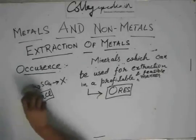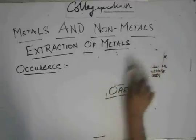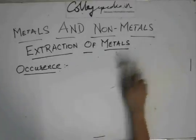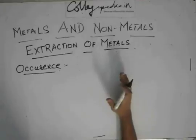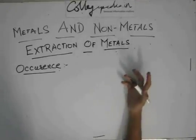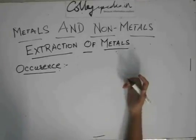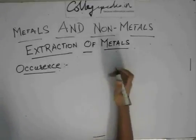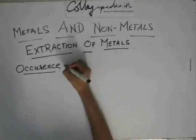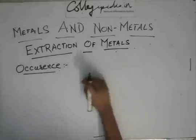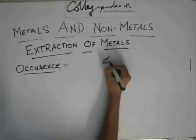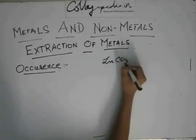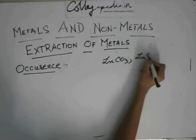So if you get a question about what are ores, you'll write: minerals which can be extracted profitably as well as feasibly. These compounds are called ores. For example, the ore of zinc is zinc carbonate or zinc sulfide — we'll learn about this later.